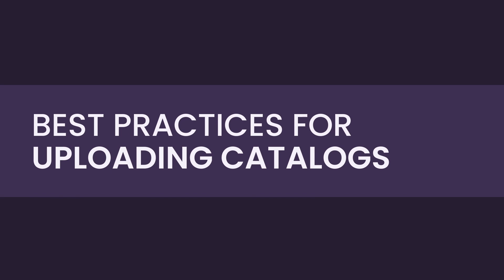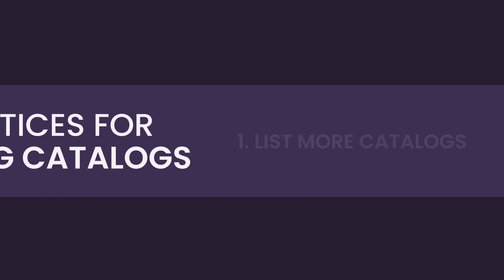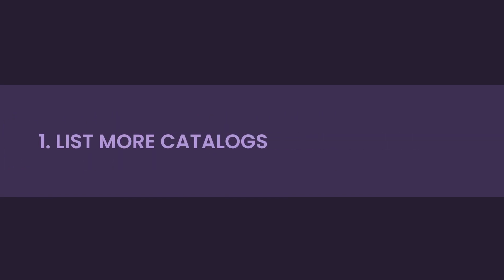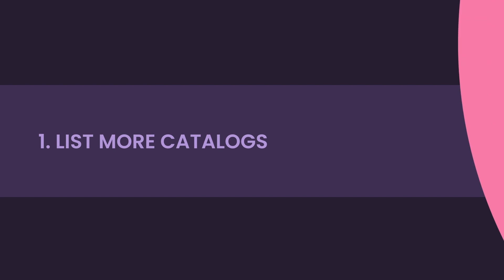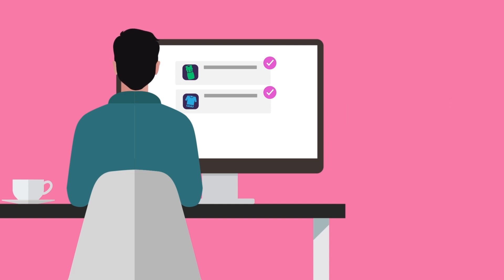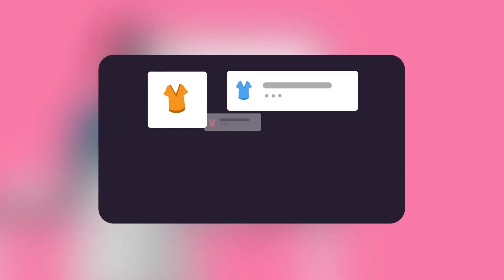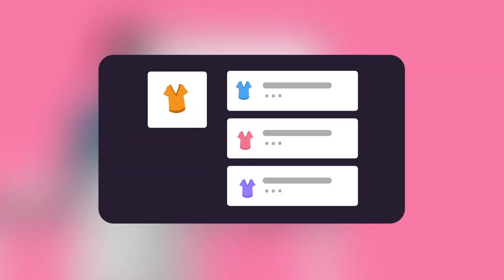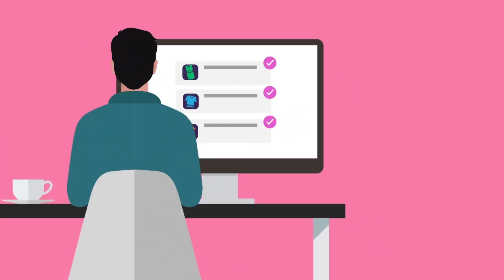Best practices for uploading catalogs. Number one: List more catalogs. We recommend you upload 10 to 15 catalogs to get orders quickly on the platform. Try to upload at least three products in each catalog. The more catalogs you upload, the better your chances will be of getting the initial few orders.